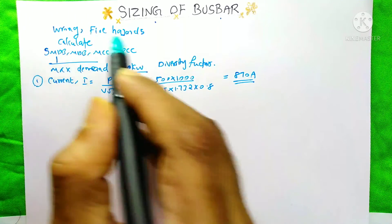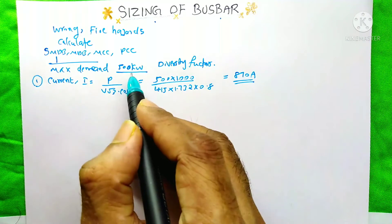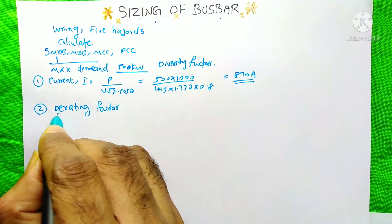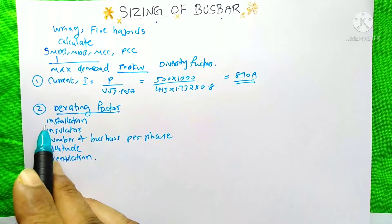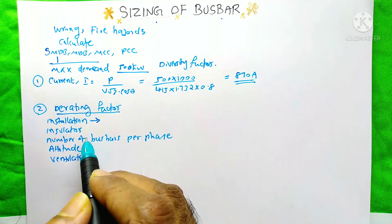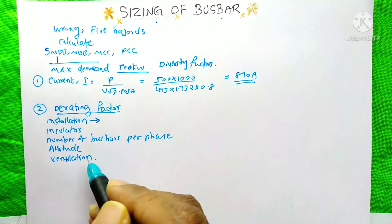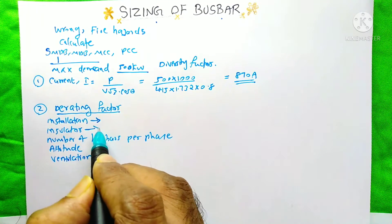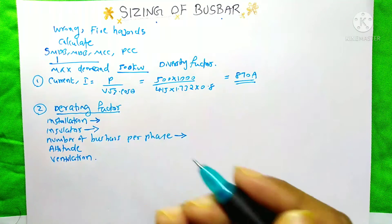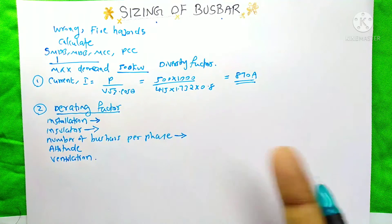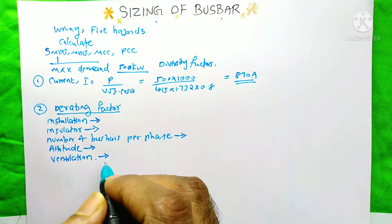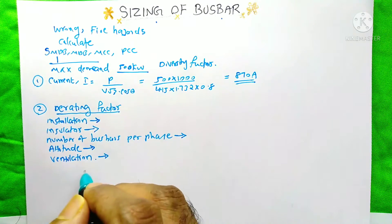This is the first step of sizing the bus bar — finding the current for the maximum demand. The second step is applying the derating factor. Derating factors depend on: installation location, the insulator at the top and bottom of the bus bar, the number of bus bars per phase, the altitude from sea level, and the ventilation.